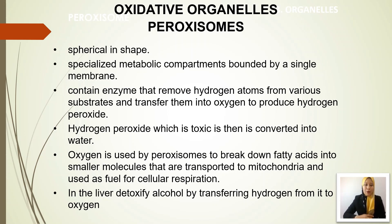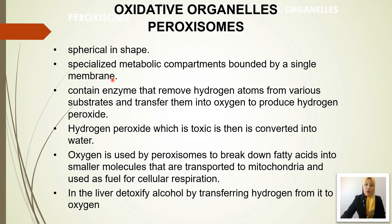So how do we know which one is a peroxisome in the cells? We can look at it in terms of their structure. The peroxisome is spherical in shape. It is a specialized metabolic compartment and they have a single membrane — they are a membrane-bound organelle with only a single membrane.